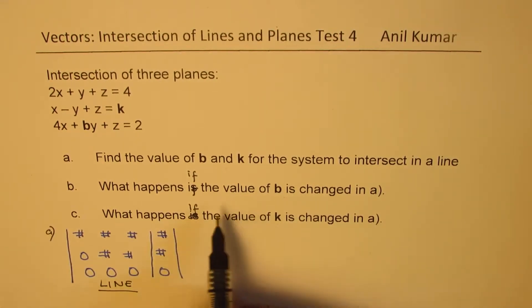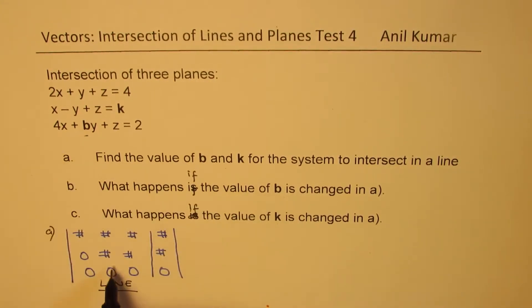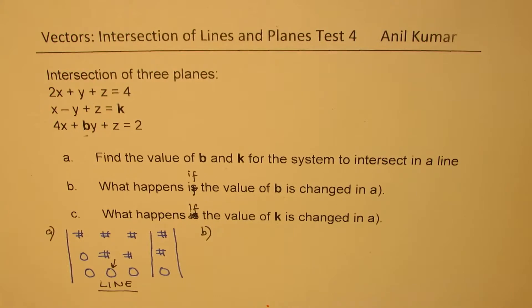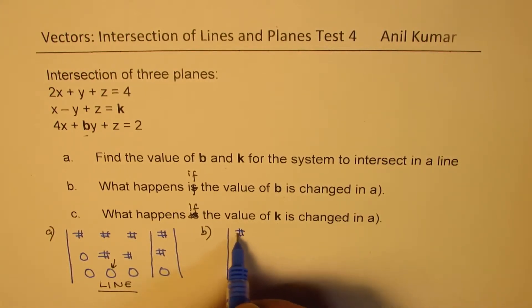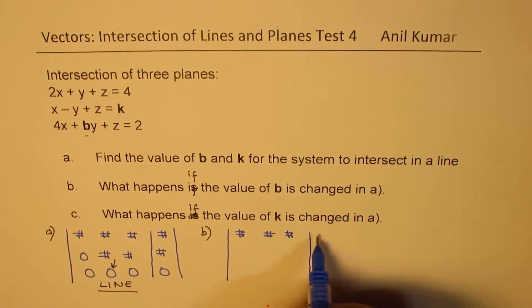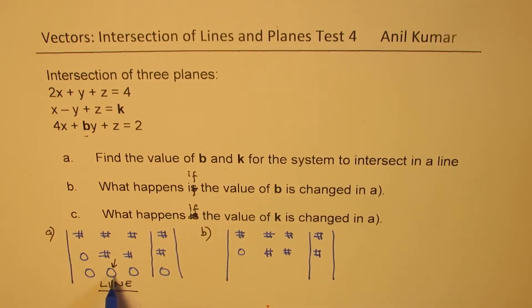Now if we change the value of b, which is right here, which affects this position. Then what happens? So in part b, if we change the value of b, then the situation might become something like this. So we'll just keep the rest. If I change this, we may not get 0 here. That's the whole idea.